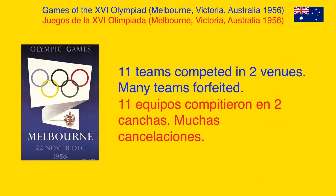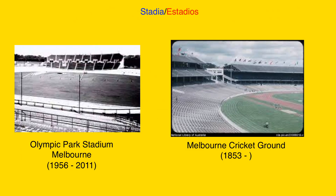In the 16th Summer Olympic Games in Melbourne, Australia, 1956, 11 teams competed in two venues for the football tournament. Many teams forfeited, canceled their matches, or just walked out. The venues used were the Olympic Park Stadium in Melbourne, opened in 1956 and demolished in 2011, and the Melbourne Cricket Ground, opened in 1853.